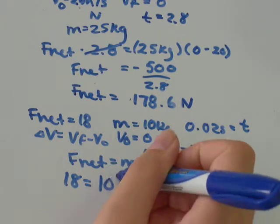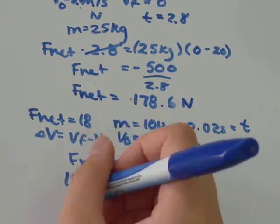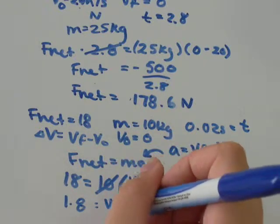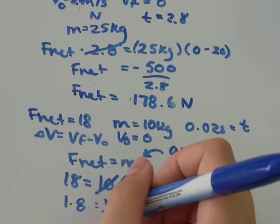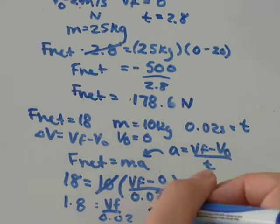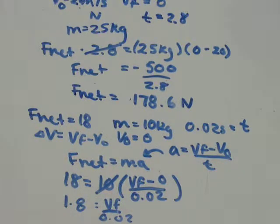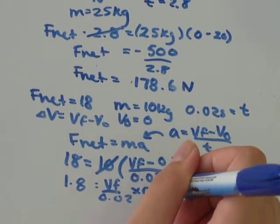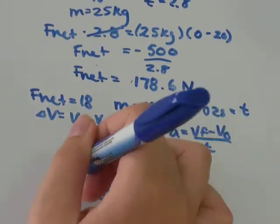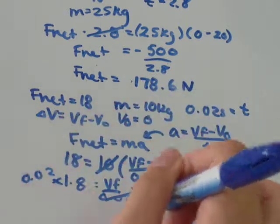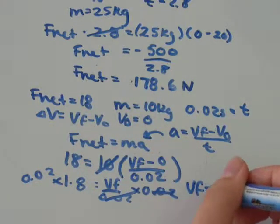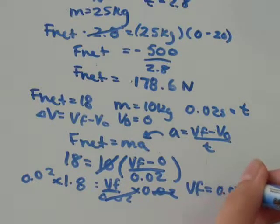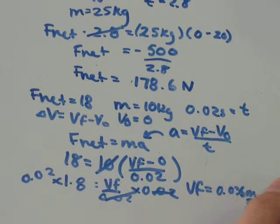I'll divide by 10 to get rid of that. 18 divided by 10 is just going to be 1.8, and that's going to equal v_f over 0.02. To solve for v_f, all I need to do is multiply 0.02 on both sides. When I do that, I get v_f equals 0.036 meters per second.